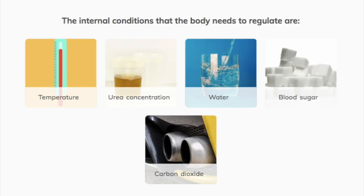Homeostasis refers to all the processes that take place to keep the internal conditions of a cell or organism constant in response to internal and external environmental changes. Internal conditions that need to be regulated include body temperature, urea concentration and the levels of water, blood sugar and carbon dioxide.